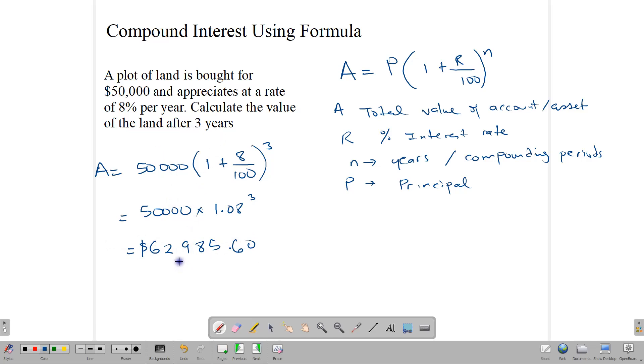And notice that this formula calculates directly what the value will be. If you want to find out in terms of if it was an account and you want to find what the interest was, then you would have to go subtract the principal. So you subtract $50,000 from that and you would see that it's $12,985 as we had in the first question, in the previous question. And so this is how we go about using the compound interest formula to work out compound interest for a time period.